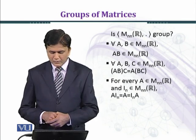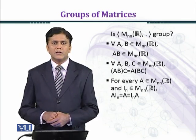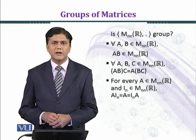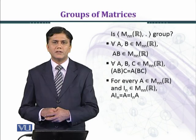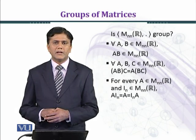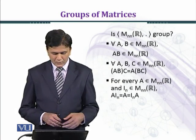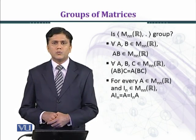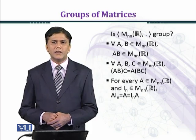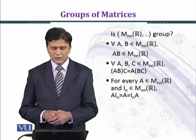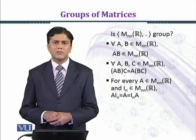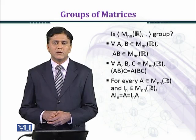For every matrix A of order n by n with real entries, and I_n the identity matrix — which has ones on the diagonal and zeros elsewhere — we have A·I_n = A = I_n·A. This implies I_n is the multiplicative identity of matrices of order n by n with real entries.